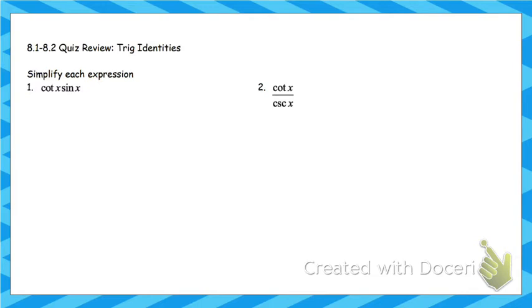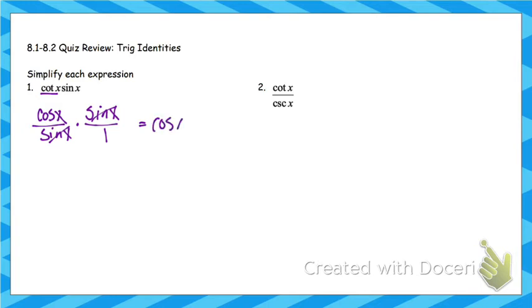Alright, so I'm going to go ahead and do the first one. A really common strategy is to rewrite things in terms of sines and cosines. Cotangent is the same thing as cosine divided by sine. Sine is already in terms of sine, so I don't have to change that. Those sines are top and bottom, so they'll cancel out, and I'm left with cosine.